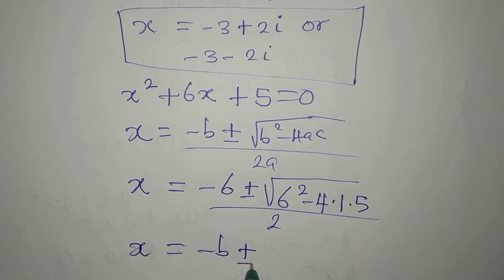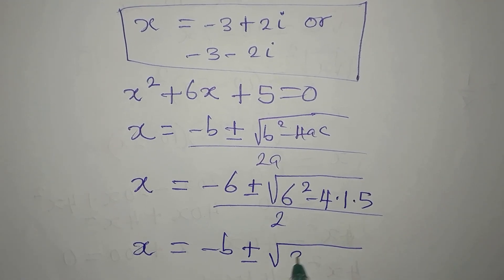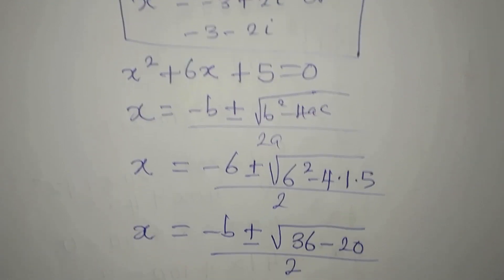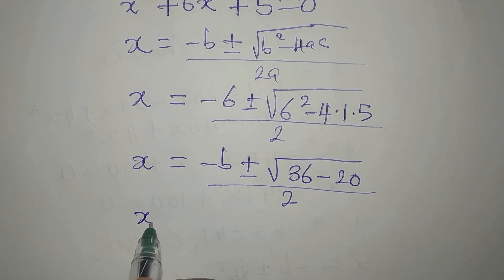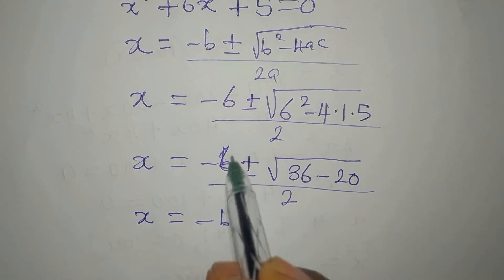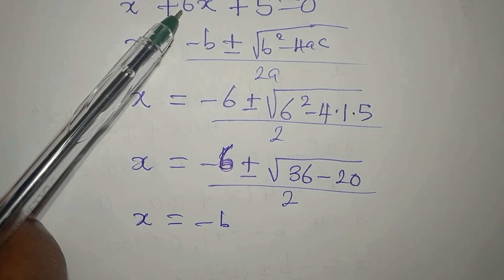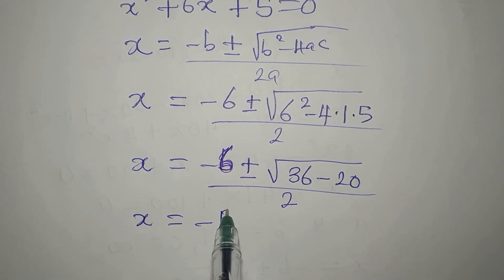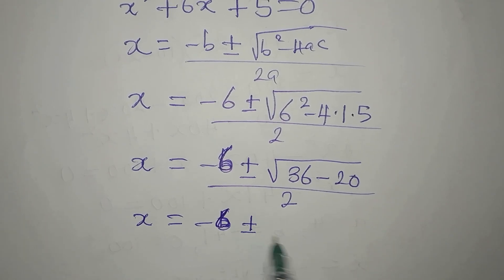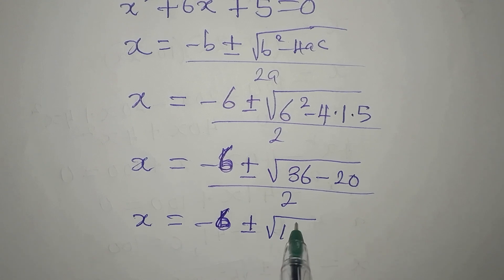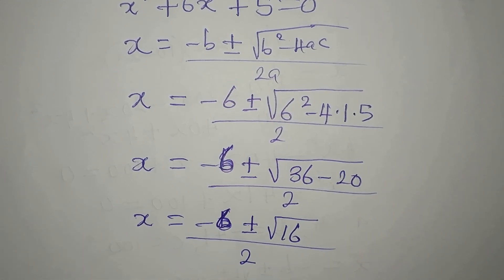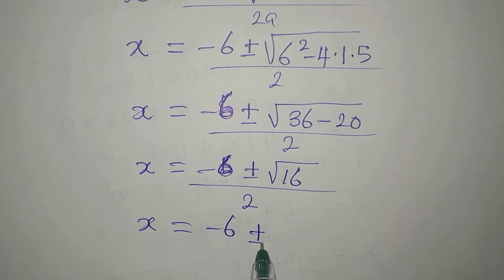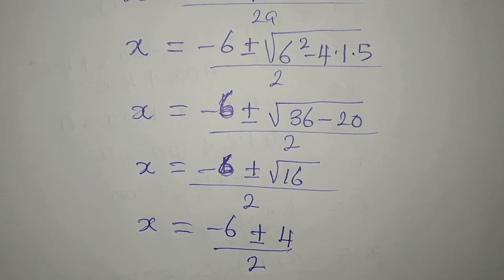So x equals minus 6 plus or minus the square root of 6 squared, which is 36, minus 4 times 1 times 5, which is 20, all over 2. Note: the negative in the formula will catch you if you're not careful. So we have negative 6 plus or minus the square root of 36 minus 20, which is 16, divided by 2.